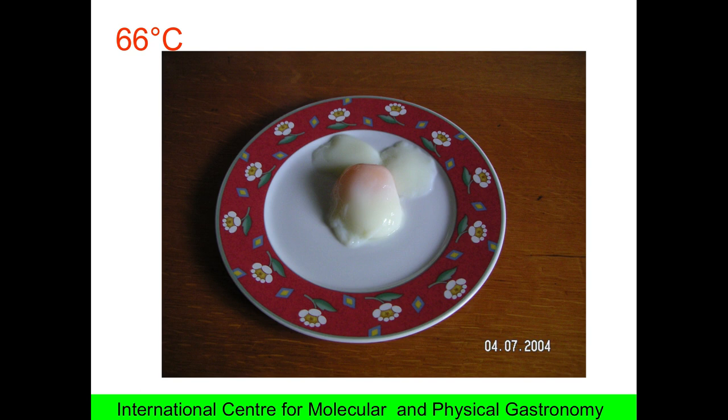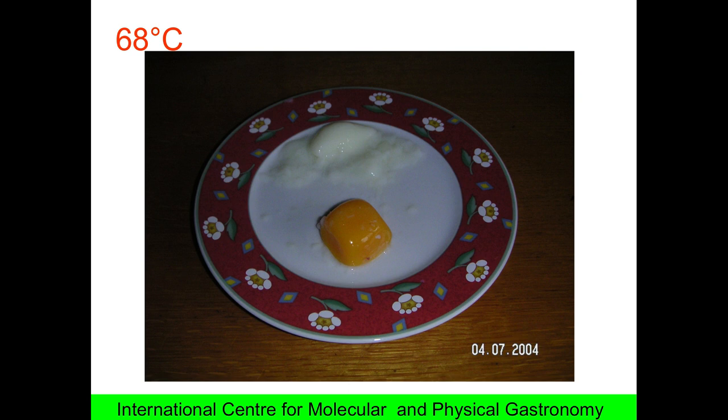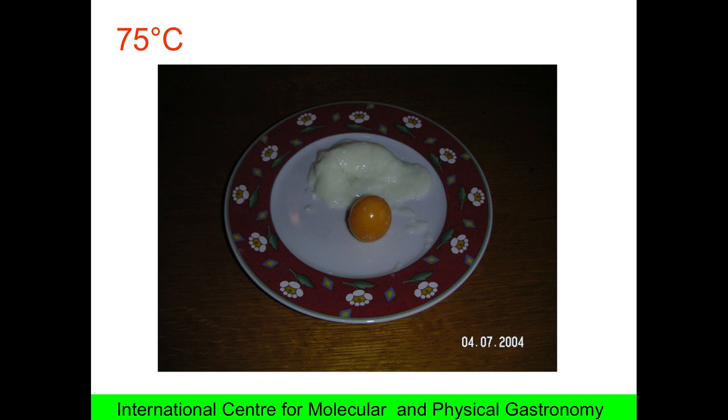68, now the egg yolk is changing and you can mold it like a pomade. It's very interesting. Personally, I prefer the egg cooked at 67, but I don't have the picture. I'm sorry. Now you move to 75 and you see there is another result.